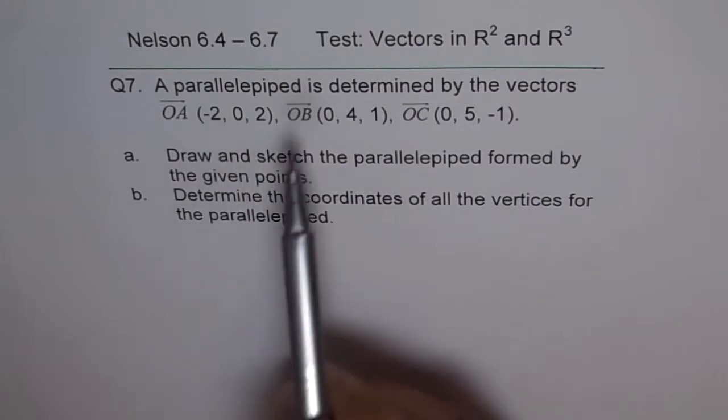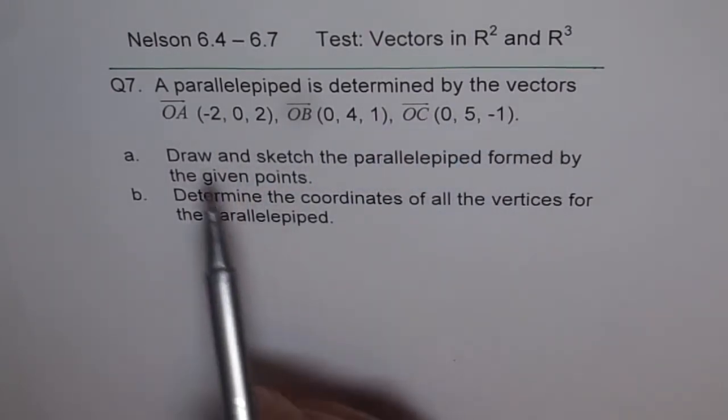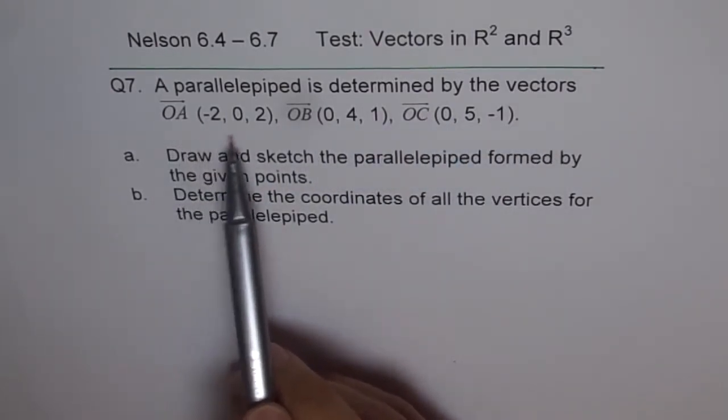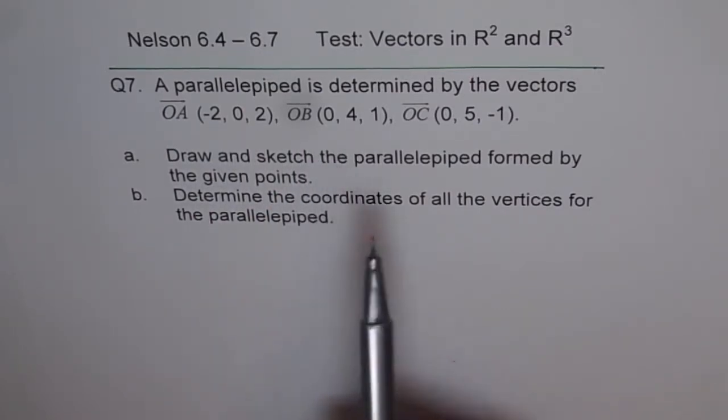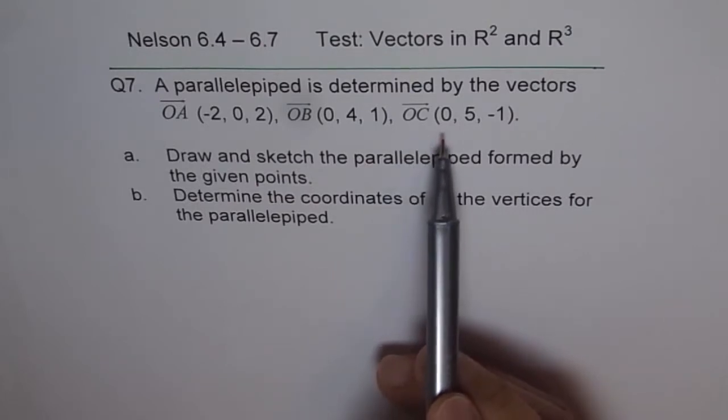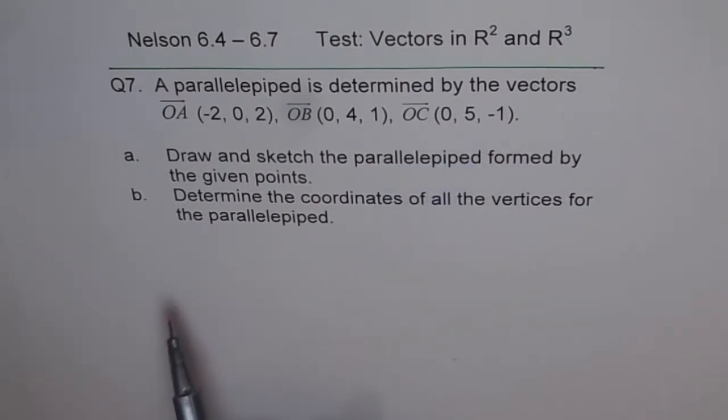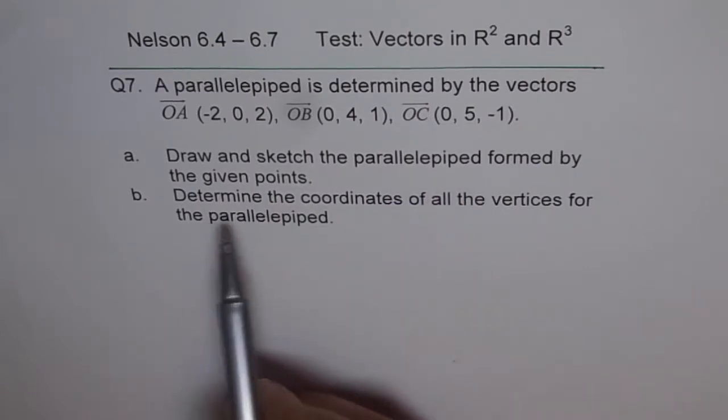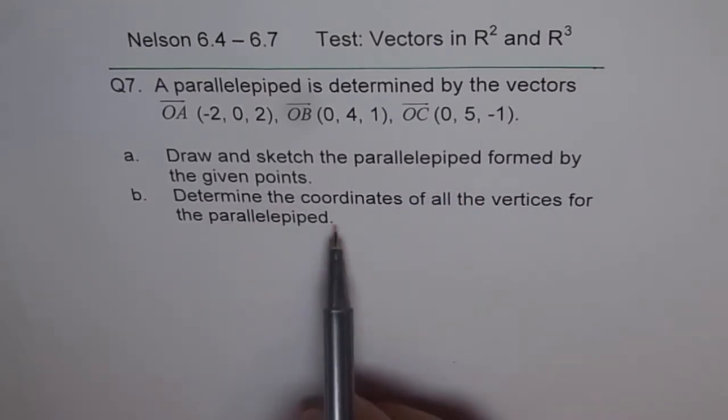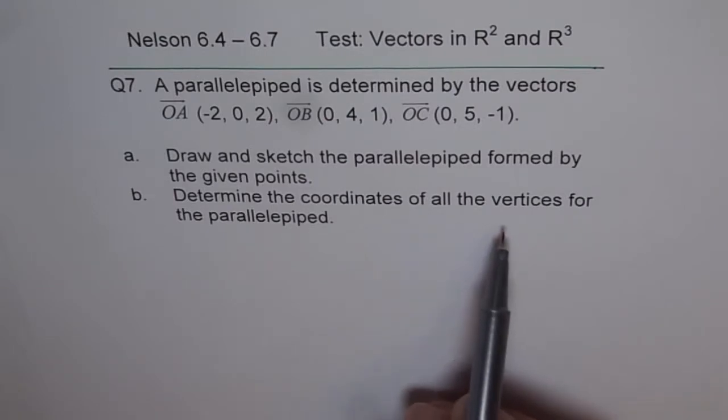A parallelepiped is determined by the vectors OA (-2, 0, 2), OB (0, 4, 1), and OC (0, 5, -1). Draw and sketch the parallelepiped formed by the given points. Determine the coordinates of all the vertices for the parallelepiped.